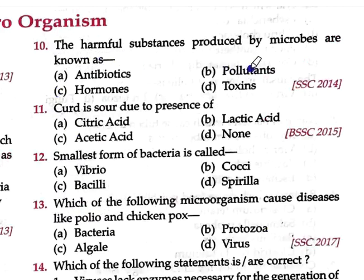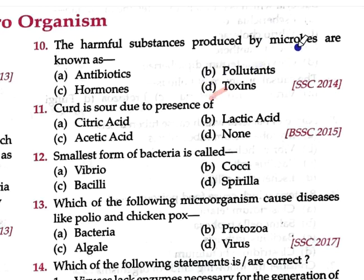Question number 10: The harmful substance produced by microbes is known as — A: Antibiotic, B: Pollutant, C: Hormone, D: Toxin (SSC 2014). Option D is correct. Microbes — specifically bacteria and fungi — produce microbial toxins, and these toxins damage the host cell.